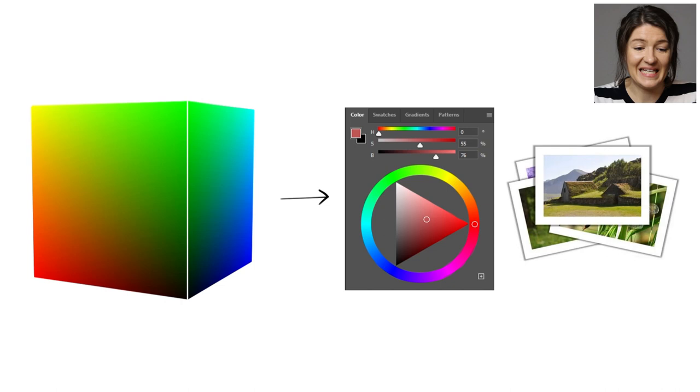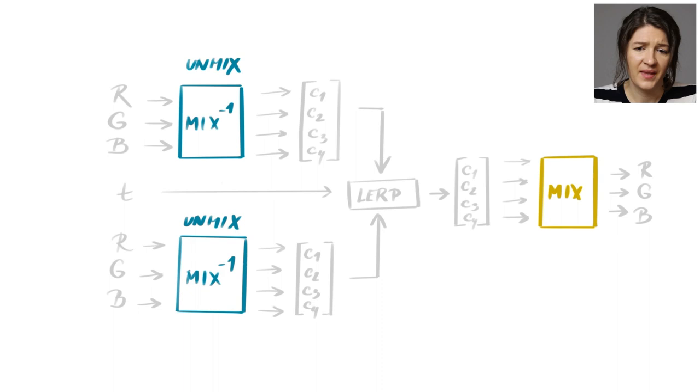We thought so too, but it isn't. There is another problem, maybe a little less obvious, but a very critical one. Remember that in order for all this to work, the unmix and mix function must be invertible. And at this point, we cannot guarantee that they are. Now let's see why.